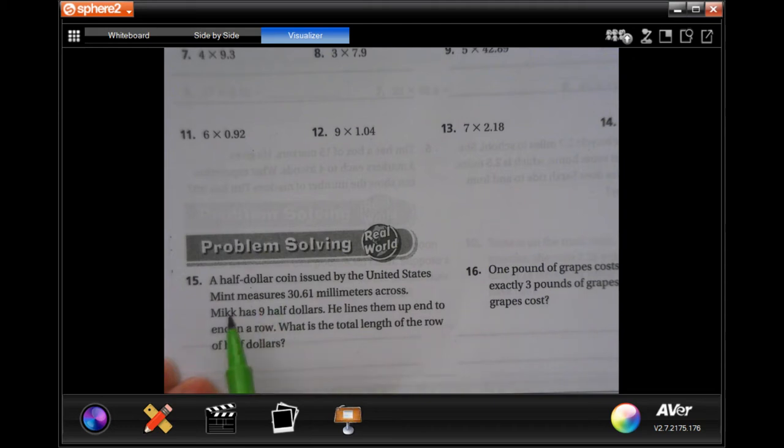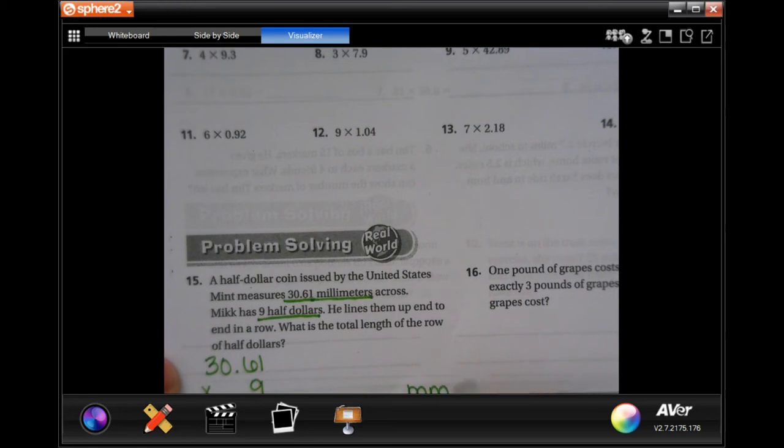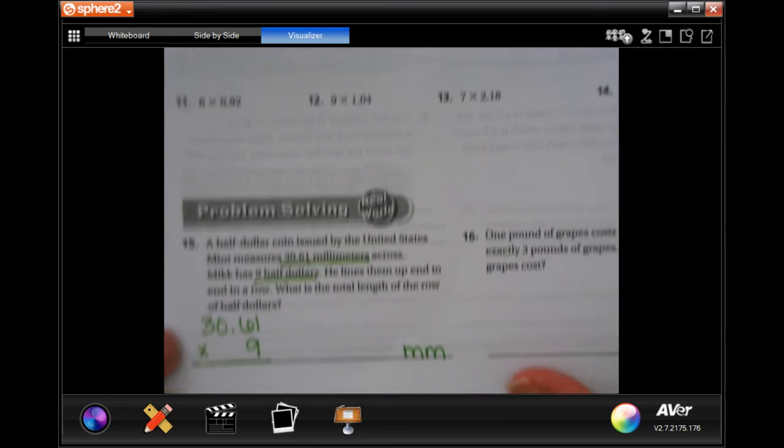And we're going to go down to number 15, where it says a half-dollar coin issued by the United States Mint measures 30.61 millimeters across. Mick has nine half-dollars. He lines them up end-to-end in a row. What's the total length of a row of half-dollars? So, we're going to put 30.61, and we're going to multiply that by nine. And whatever our answer is, it's going to be in millimeters, which we can just use mm.